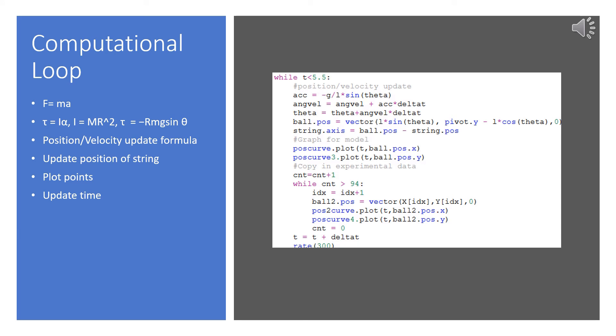Then, the code plots the new position of the ball, plots the position from the tracker data as detailed on the previous slide, and then updates the time using delta t.